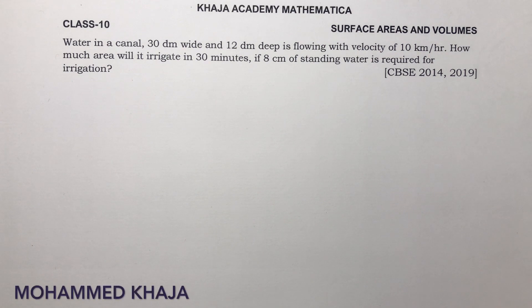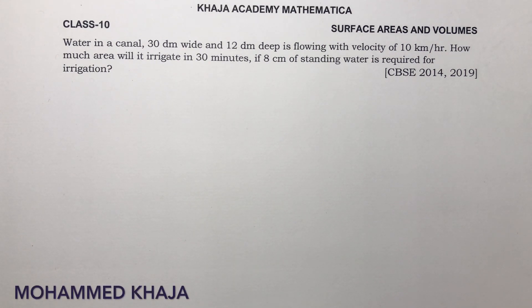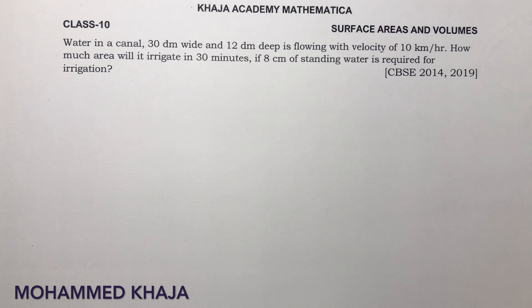Water in a canal 30 dm wide and 12 dm deep is flowing with a velocity of 10 km per hour. How much area will it irrigate in 30 minutes if 8 centimeters of standing water is required?